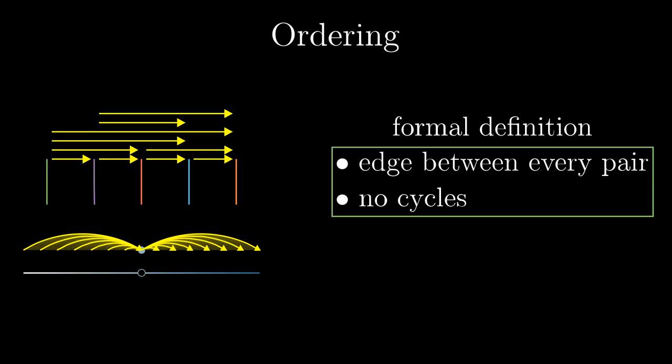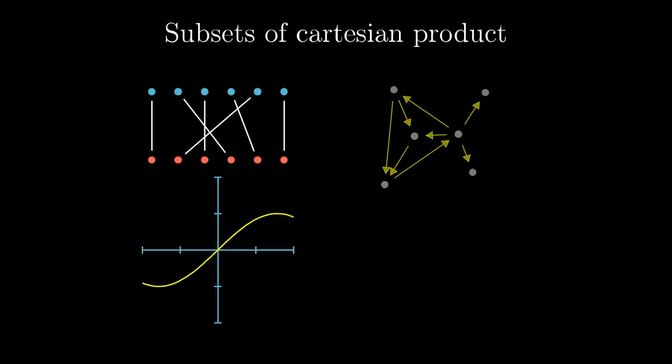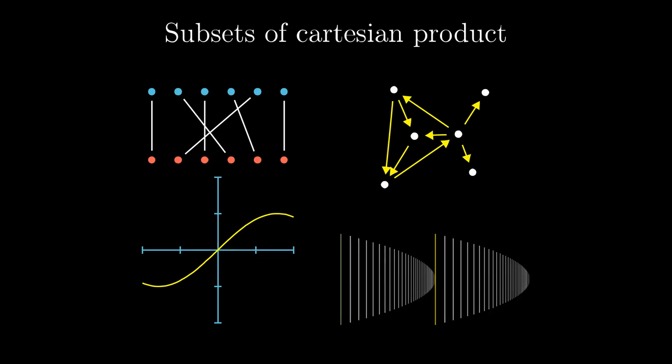We have another formal object, the ordering. So, although we can be used to look at different mathematical objects differently, sometimes we talk about a matching, sometimes about a graph of a function, sometimes about a directed graph or about an ordering, all the four cases are just some special cases of a subset of Cartesian product. Cool, isn't it?